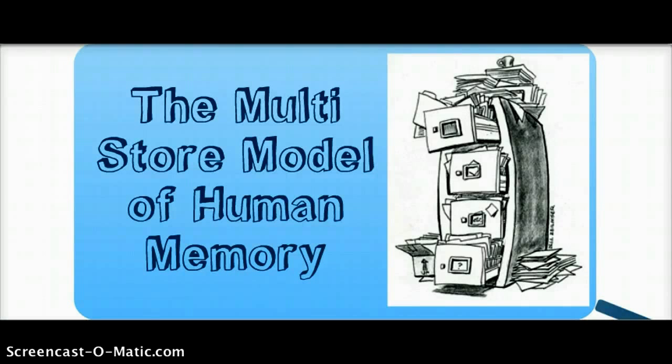The multi-store model of human memory was originally proposed in 1968 by Atkinson and Shiffrin. Their original model comprised just two stores and a couple of basic processes, and what they wanted to demonstrate was that there was a dichotomous or absolute difference between two types of memory that human beings have.